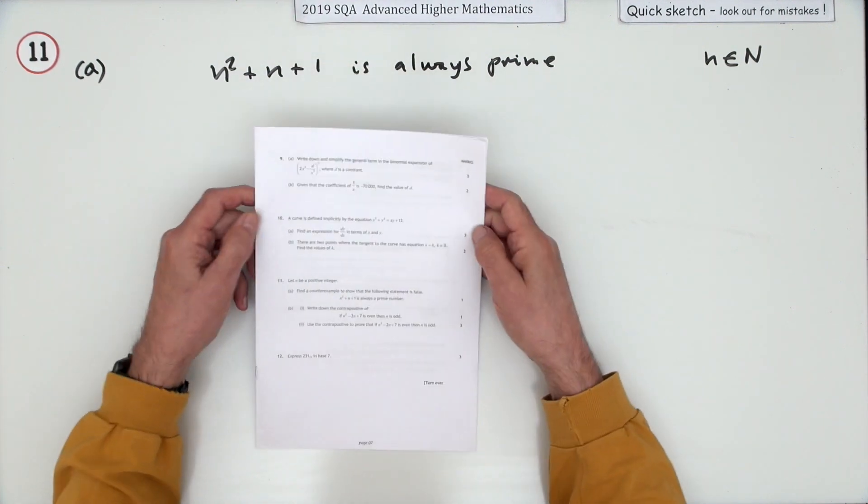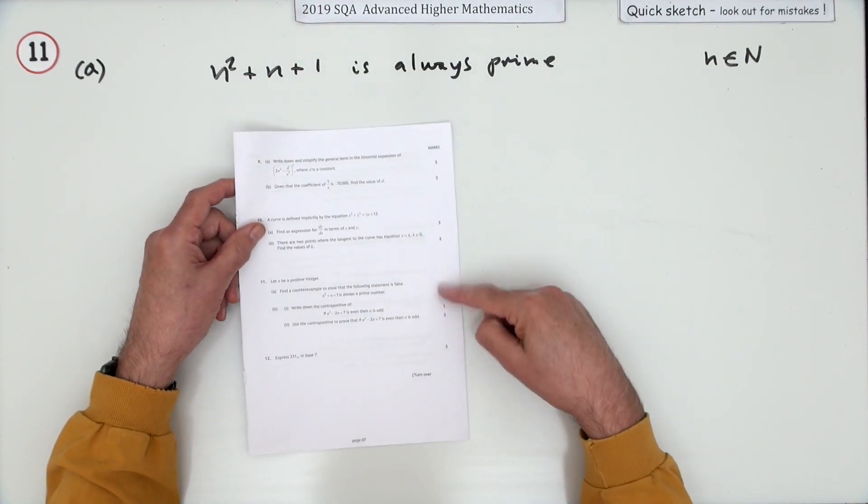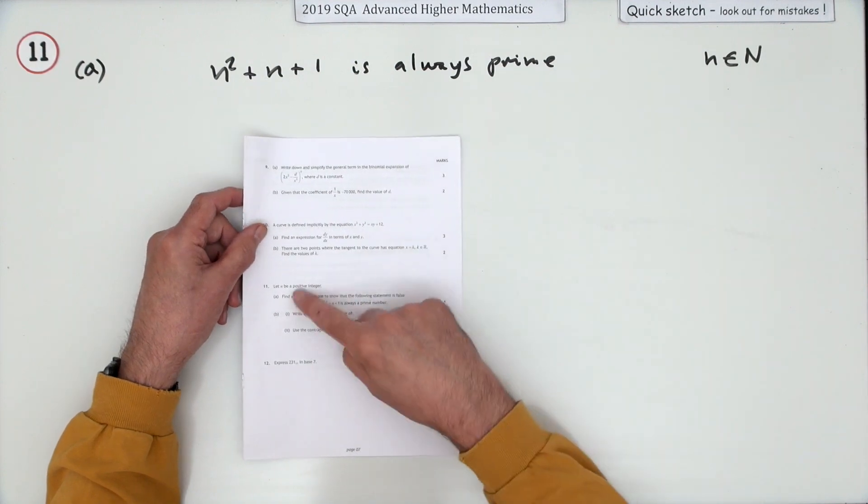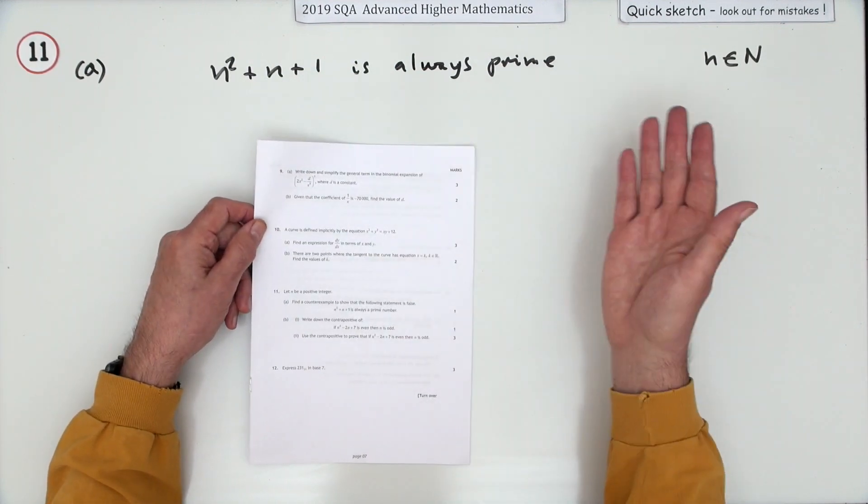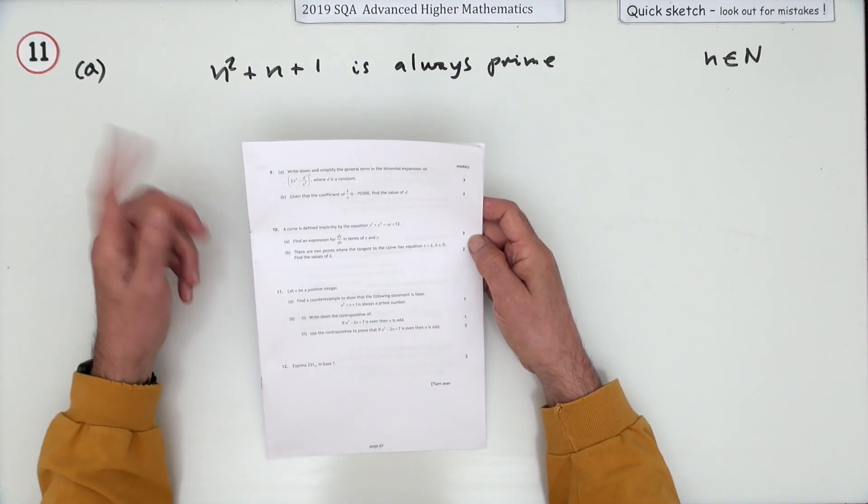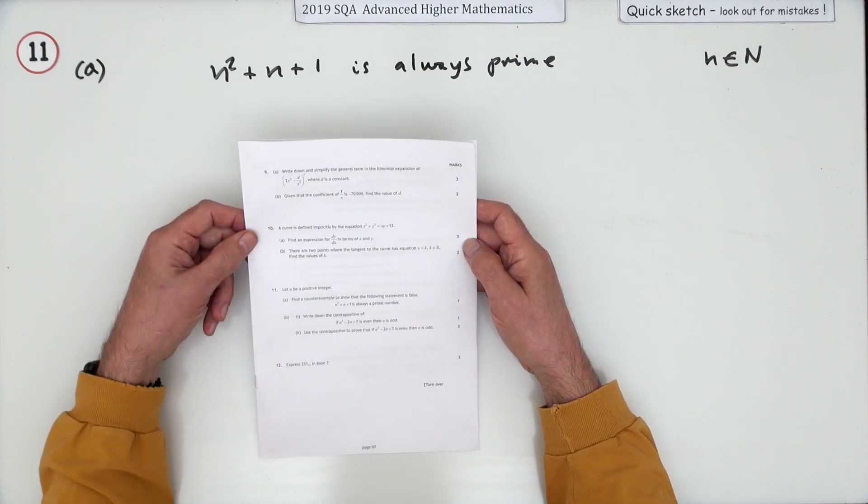Number 11 from the 2019 Advanced Higher Maths, a five mark question on proofs with two parts. Usually one's true, one's false, but normally you've got to decide which one's true or false and prove it appropriately.